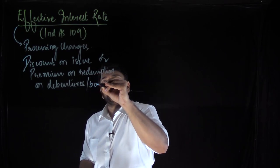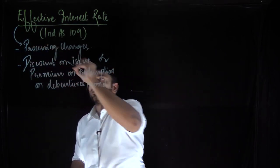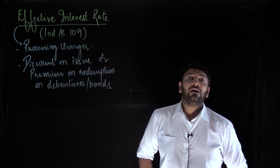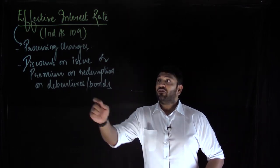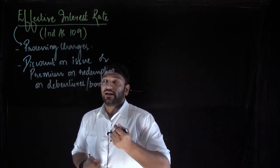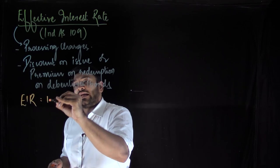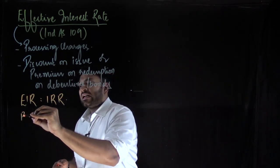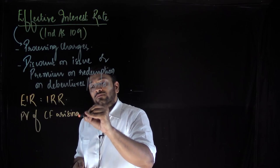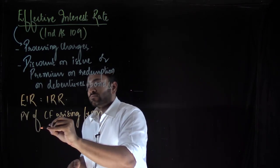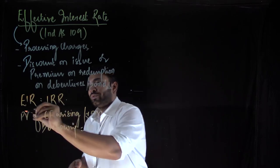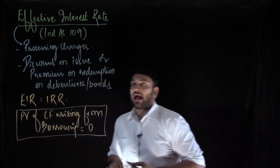Debentures and bonds are also long-term sources of finance, so they are also considered borrowings. All discounts on issue or premiums on redemption will be included under the computation of effective interest rate. The EIR is simply equal to the IRR where the present value of cash flows arising from borrowing are equated to zero. This is where we get the actual effective interest rate.